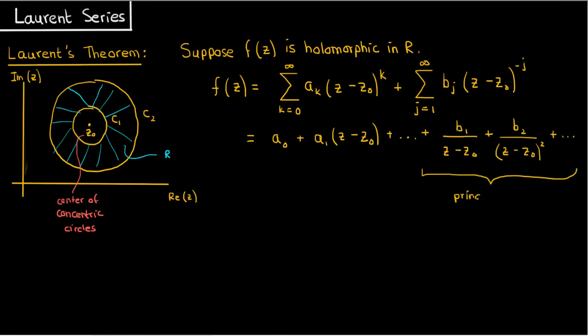This portion, the one with negative powers, is also called the principal part of the Laurent series, while the polynomial part is called the analytic part of the Laurent series.